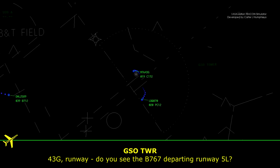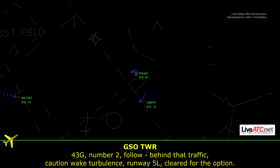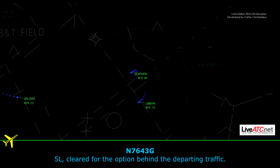4-3 Golf, runway — do you see the 767 depart runway 5 left? I see him. 4-3 Golf, number 2, follow behind that traffic, caution wake turbulence, runway 5 left, cleared for the option. 5 left, cleared for the option, behind the departing traffic.